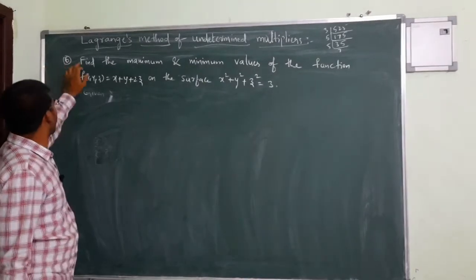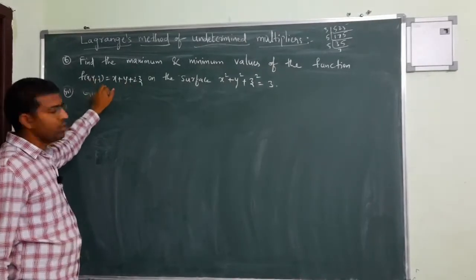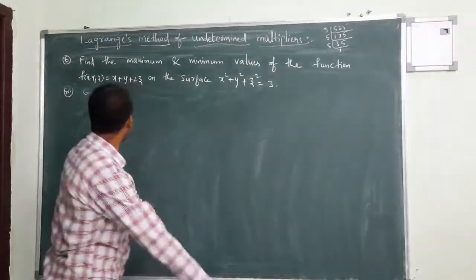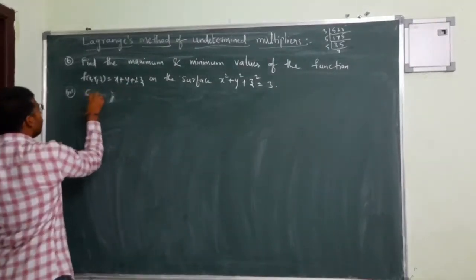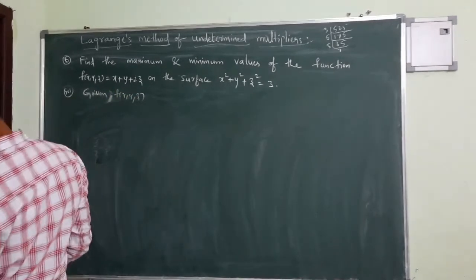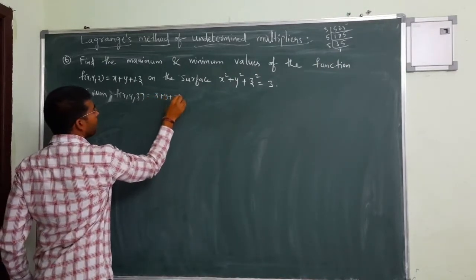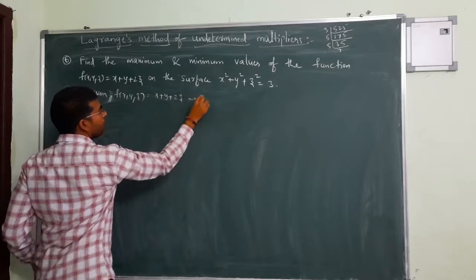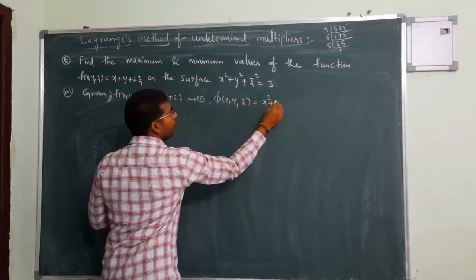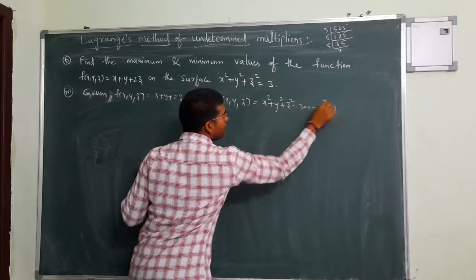Let us see the sixth problem: find the maximum and minimum values of the function f of x, y, z equal to x plus y plus 2z on the surface. Given f of x, y, z equals x plus y plus 2z — this is equation 1. The condition is: on the surface x squared plus y squared plus z squared minus 3 equals 0 — this is equation 2.